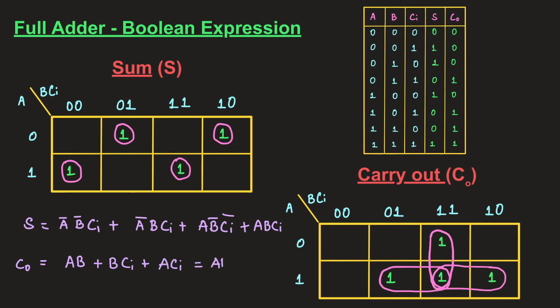So carry out can be expressed as C₀ = a·b + ci·(a + b). Now let us rearrange the sum expression in terms of this carry out, in order to implement the full adder using static CMOS design.